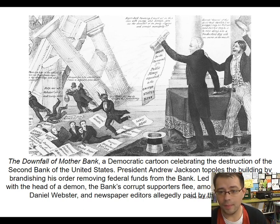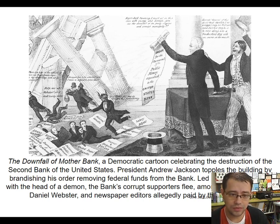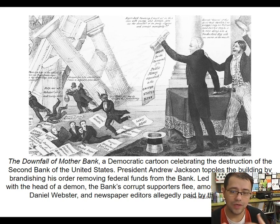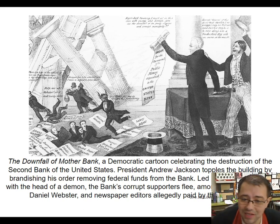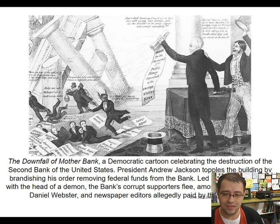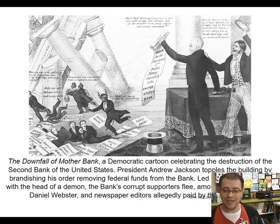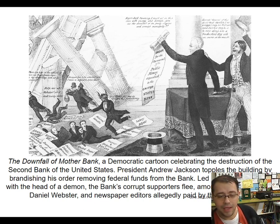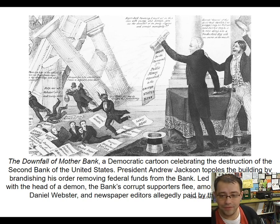Why? It's all about politics. Biddle is a Whig, and the Whigs currently controlled Congress, so he goes to the Whigs in 1832 to get the bank renewed while they still control things. It's also an election year — Jackson is up for re-election. Biddle, and probably the entire Whig leadership, looked at this as a win-win situation: either Jackson vetoes the bank or he doesn't.